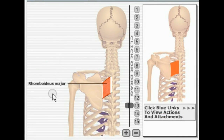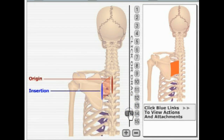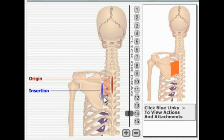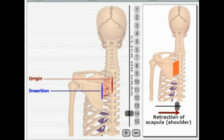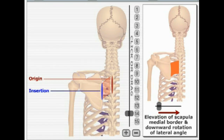Underneath the trapezius, we find the rhomboids. We're going to look at rhomboid major. It originates on the spinous processes of vertebrae T2 to T5 and inserts on the medial border of the scapula. Its primary action is adduction of the scapula.